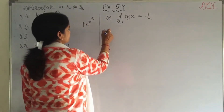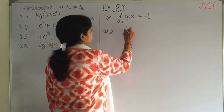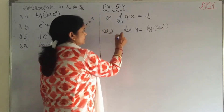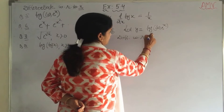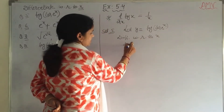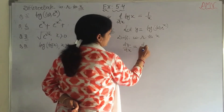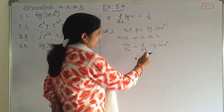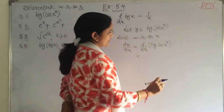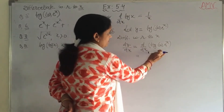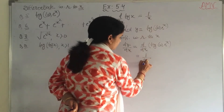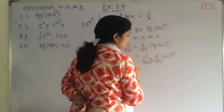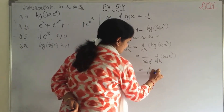Question number 5: let y = log(cos(e^x)). Differentiating with respect to x, dy/dx = d/dx of log(cos(e^x)). First, derivative of log x is 1/x, so here it is 1 / cos(e^x).